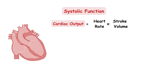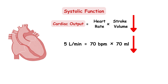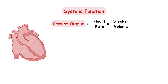For a healthy individual weighing 70 kilos, cardiac output at rest is around 5 liters per minute. Assuming a heart rate of 70 beats per minute, the stroke volume would be approximately 70 milliliters. In a patient with heart failure who fails to pump enough blood into the body, we have low stroke volume and therefore low cardiac output, which is the main feature of heart failure. Because cardiac output cannot be measured clinically, ejection fraction is the index used to estimate systolic function.